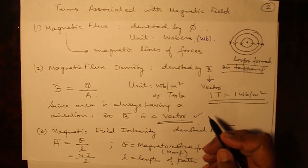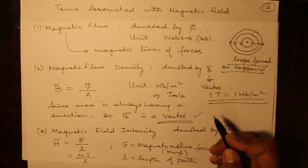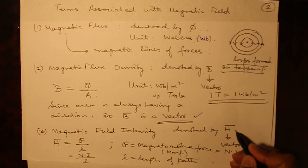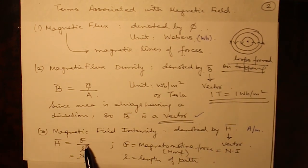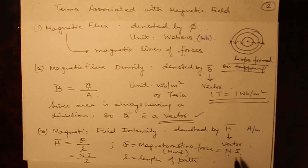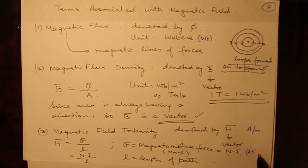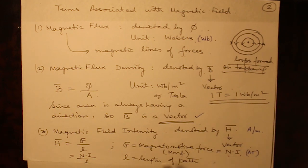Now we come to the third term: magnetic field intensity H, a very important term. It is denoted by H and its unit is ampere per meter. H is defined as magnetomotive force per unit length. Magnetomotive force (MMF) is the product of number of turns N of the coil and the current I flowing through it. Its unit is ampere-turns. So MMF equals N times I, and H equals MMF divided by the length of the path.